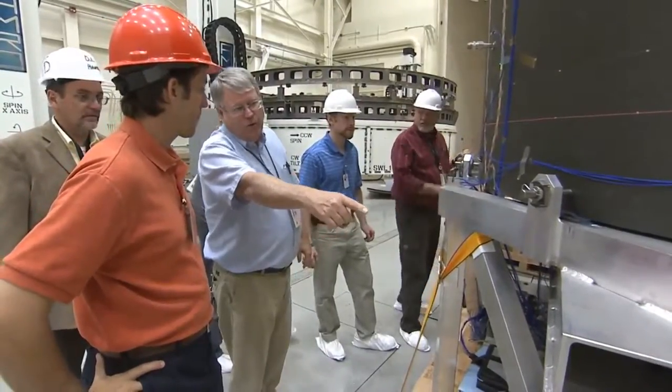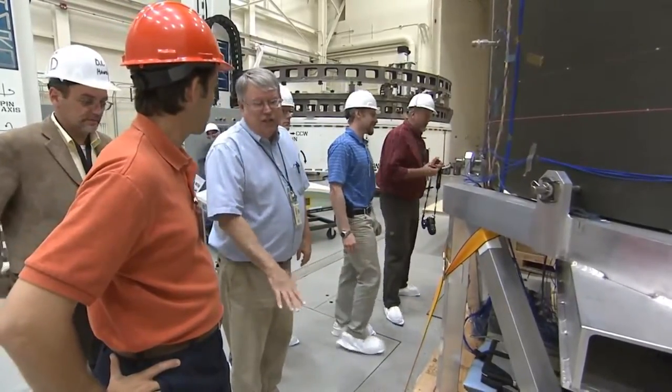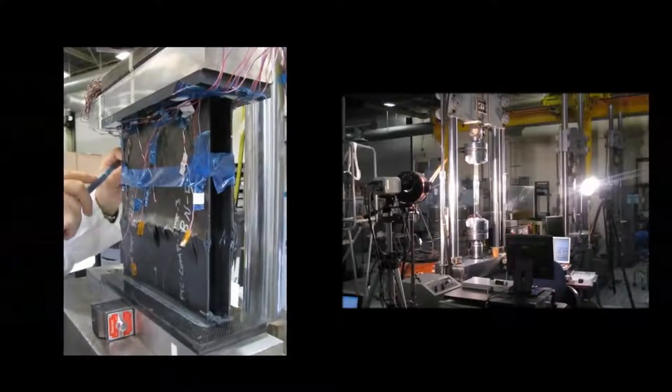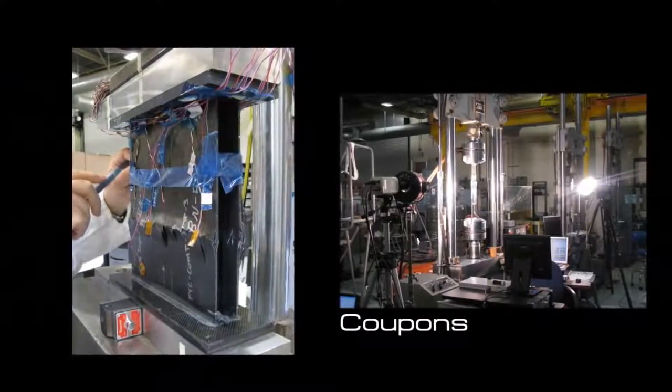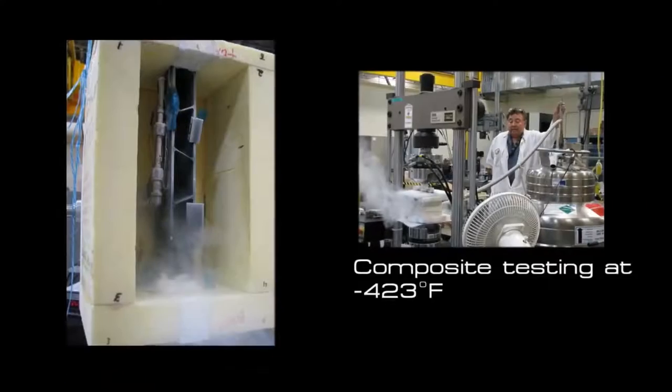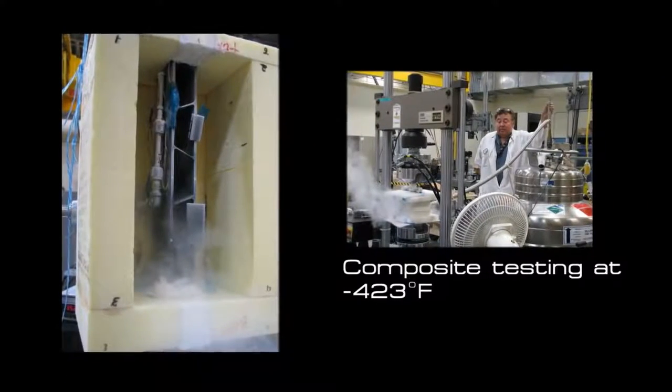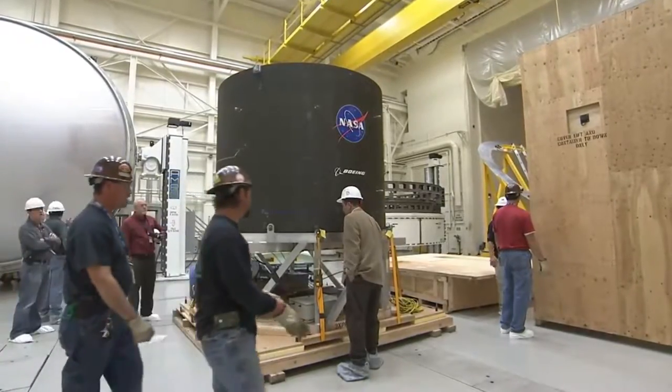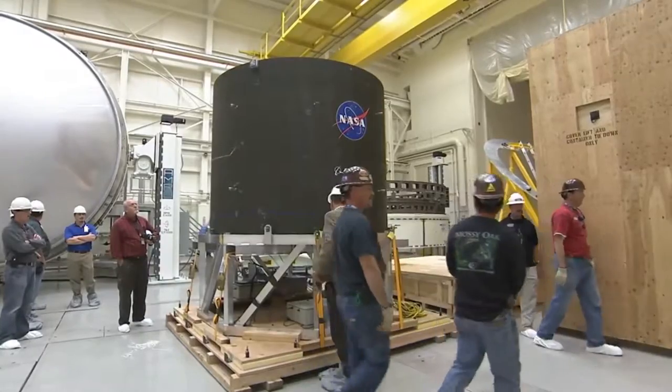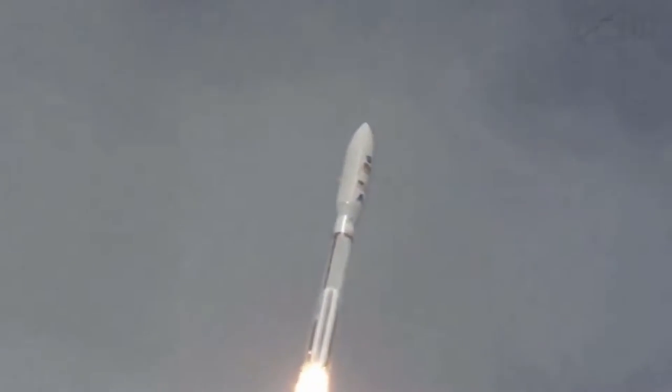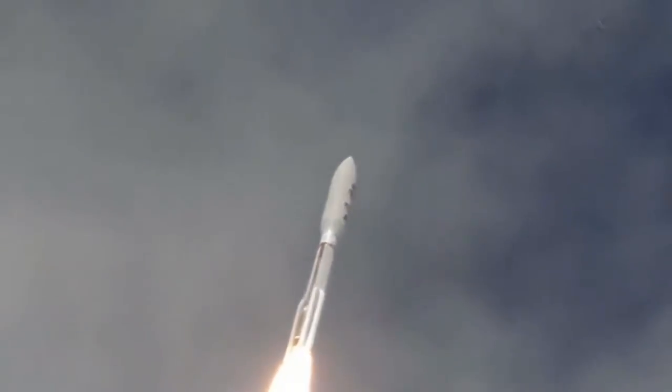Because all of this technology is relatively new, the NASA team is using a process called the building block approach. First, they test small coupons or pieces of the material to make sure that it can measure up to expectations. It is then made into larger pieces and tested again. The project is currently at the point where a scale model 2.4-meter tank is being tested, with the eventual goal to build a full-scale tank to fit on a launch vehicle.